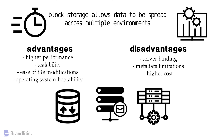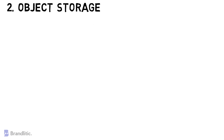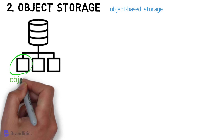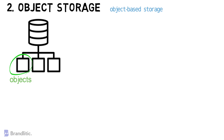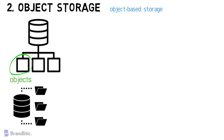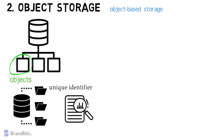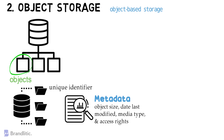Number 2: Object Storage, also known as object-based storage, is a process that involves splitting data files into individual chunks known as objects. These objects are stored in a single self-contained repository and can be distributed across multiple cloud-based servers and network systems. Each object is given a unique identifier which can be used by applications to identify and retrieve objects when stored across a distributed system. Metadata is attached to each object which contains important information and can be extremely detailed, including information like object size, date last modified, media type, and access rights.